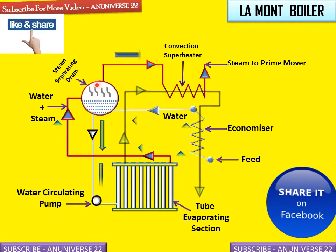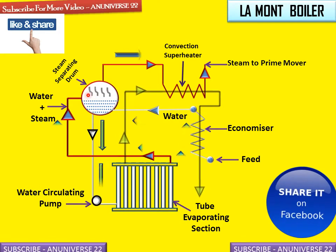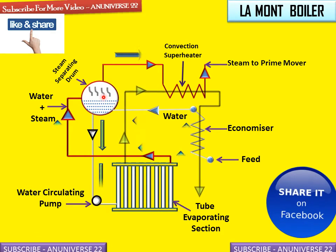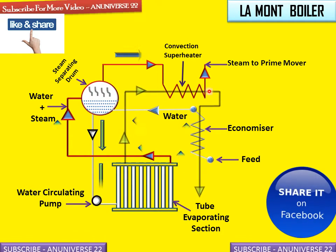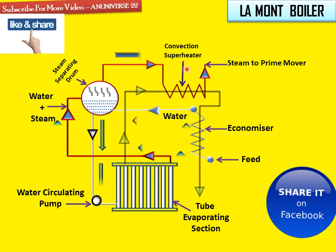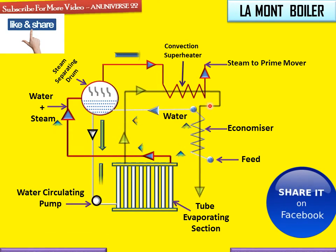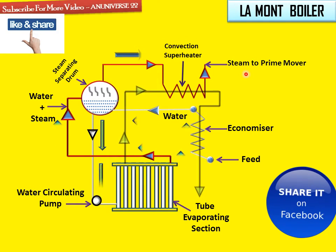In the economizer, the steam generated is saturated steam, which can cause corrosion. That is why it is heated again through the convection super heater. Finally, when the temperature of the steam increases, it is supplied to the prime mover.